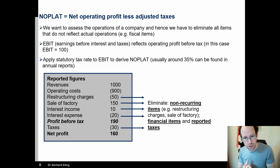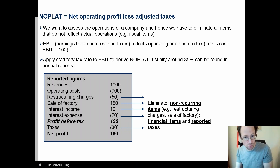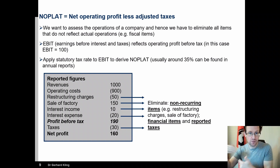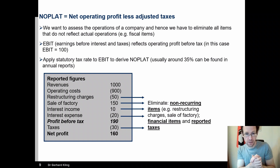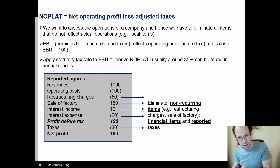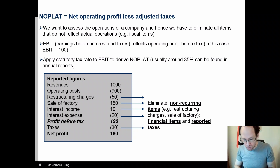Restructuring charges happen a lot — for example, if you want to cut your staff base and pay some compensation, that would be a restructuring charge. But these are one-off items unlikely to continue. The main thing we want to do going forward is understand future cash flows, and NOPLAT is one element of that. To understand future cash flows we must understand what is an ongoing activity versus a one-off event. This is why we remove all items not expected to occur repeatedly in the future.